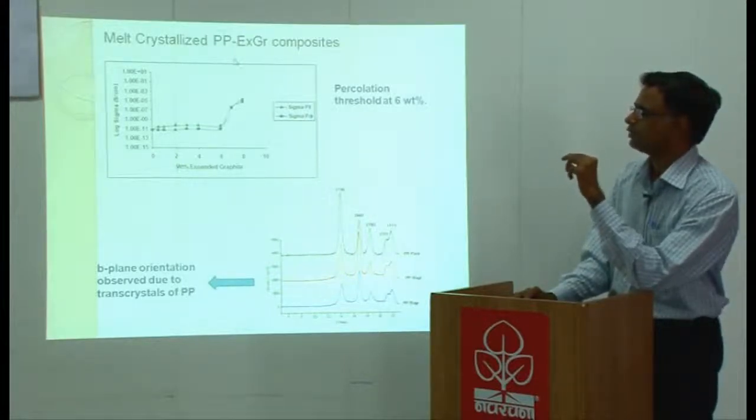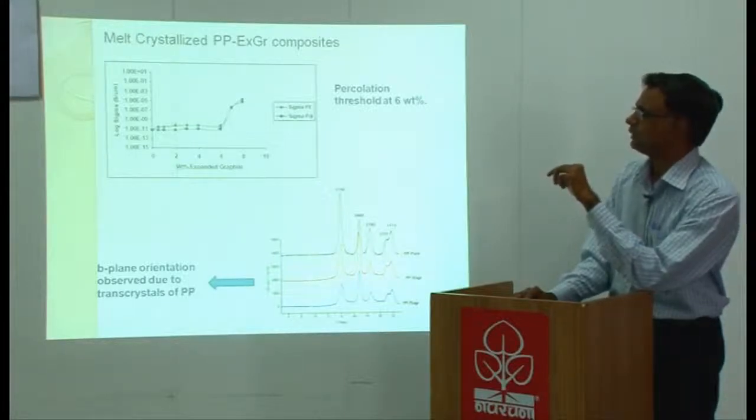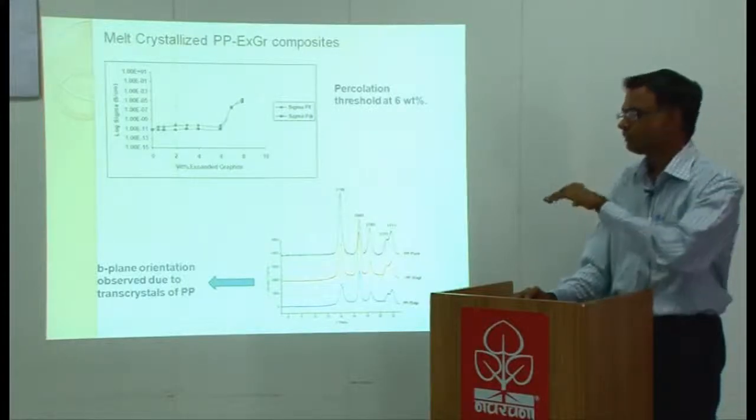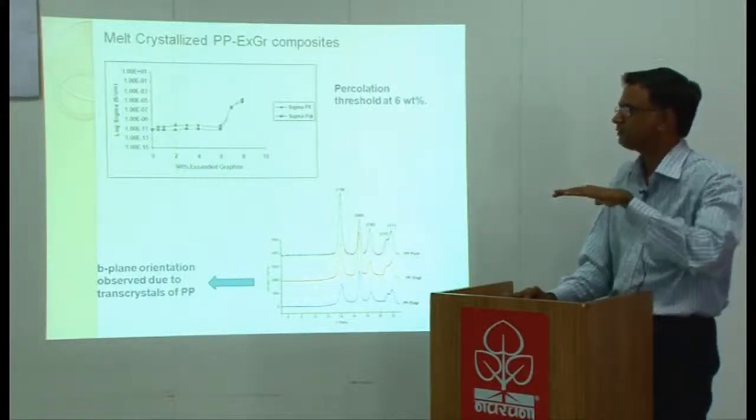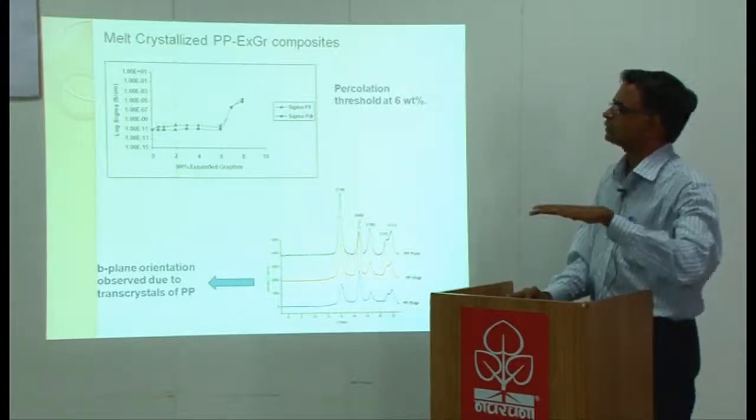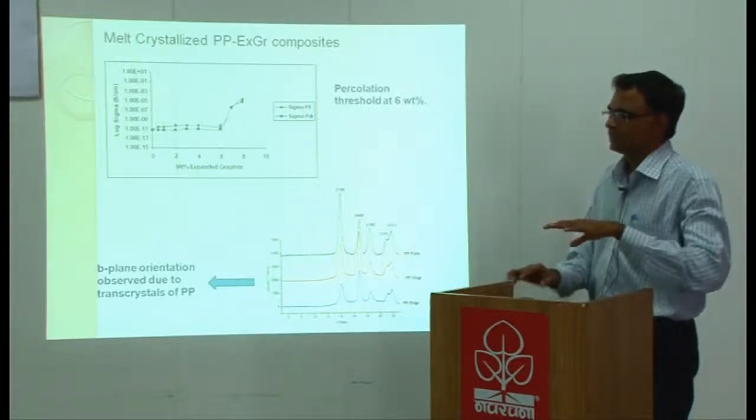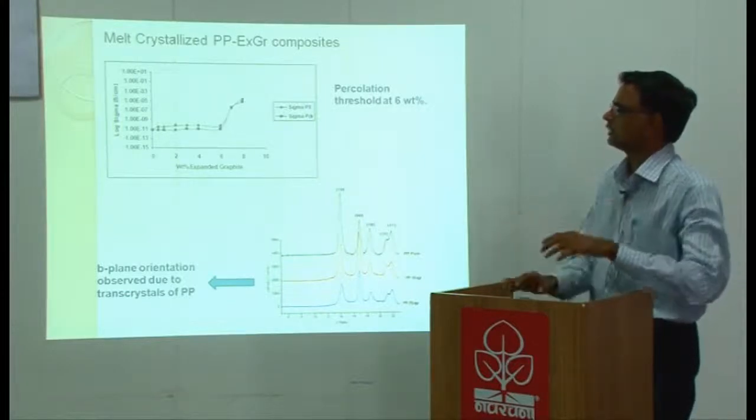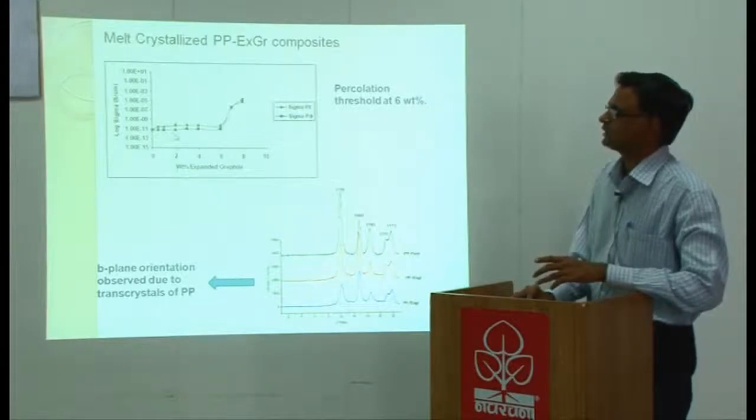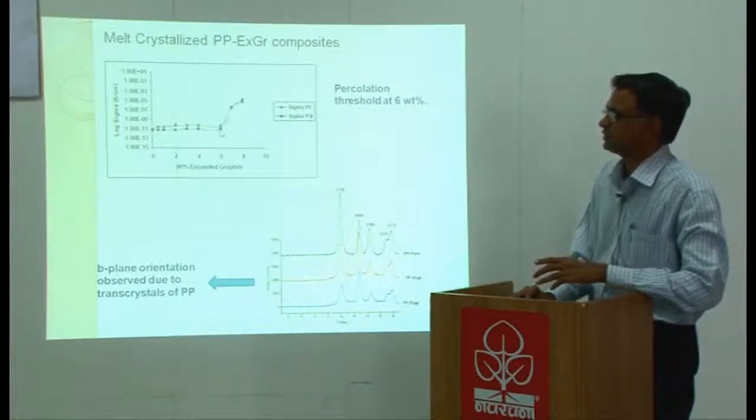Then you keep them between glass slides and heat it to 190 degrees so that polymer flows because the melting temperature of alpha PP is 168 degrees centigrade. The polymer flows, in that process the filler particles are dragged within them so that the inter-particular distance is increased which eventually results in higher percolation threshold.